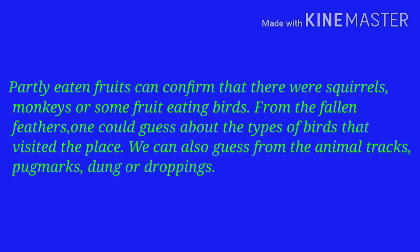Partly eaten fruits can confirm that there were squirrels, monkeys or some fruit-eating birds. From the fallen feathers one could guess about the types of birds that visited the place. We can also guess from the animal tracks, pug marks, dung or droppings.